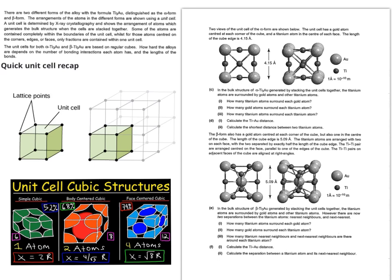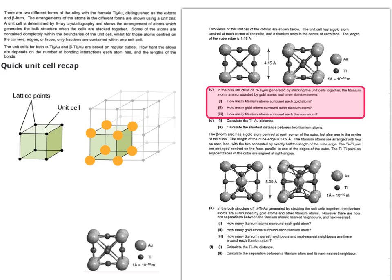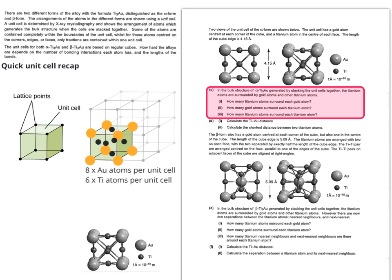Now they want us to consider the unit cell aspect of the alloy. As a quick recap, the lattice points are at the corner of the unit cell, and the actual cube itself contains varying amounts of individual atoms depending on how closely they've been packed. You don't have to worry about simple cubic, body-centre cubic, or face-centre cubic for this particular part. Let's imagine gold atoms at the corners, the lattice points. We can also put in the titaniums. That gives us 8 gold atoms per unit cell and 6 titanium atoms per unit cell.